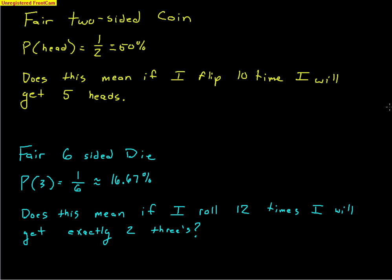Let's look at two simple examples. The first one: if you have a fair two-sided coin, everybody knows that the probability of flipping a head is 1/2 or 50%. Notice my notation: P for probability, then in parentheses the probability of getting a head. This does not mean that if I flip a coin 10 times, I will get 5 heads — 10 is the short run. If you flip a coin 10 times and get 4 heads, that doesn't mean there's a 40% chance of heads. True probability is what occurs in the long run after many, many trials.